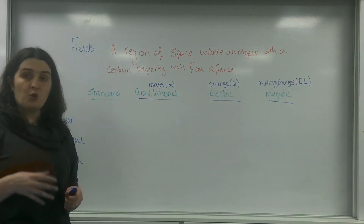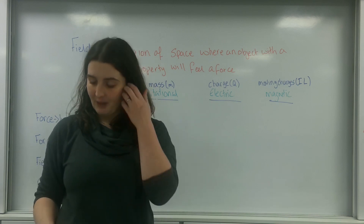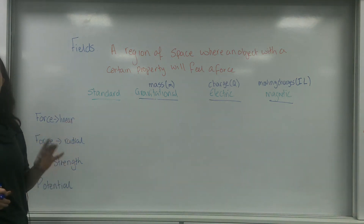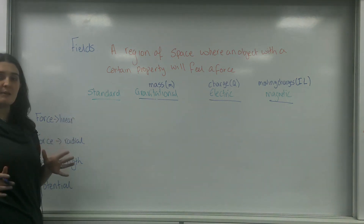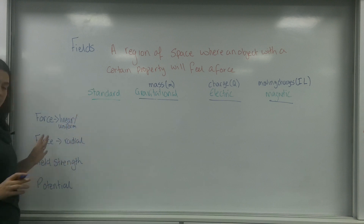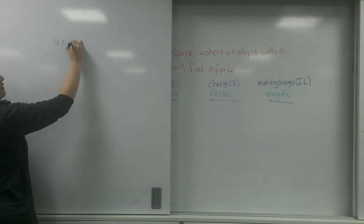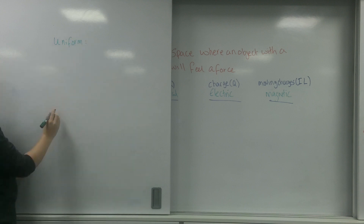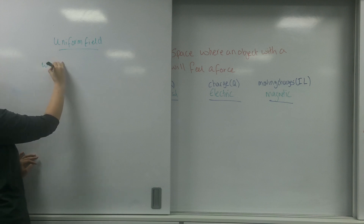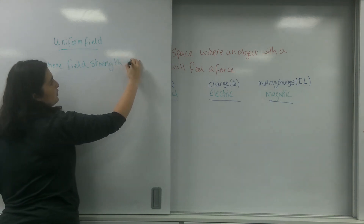Now I'm going to talk about the rules, and I'm going to apply them for each of the fields so you can see the patterns. The force in a linear — or in other words, a uniform field. A uniform field is one where the field strength is constant.